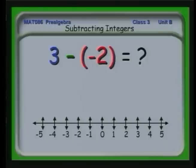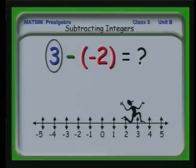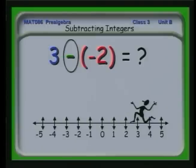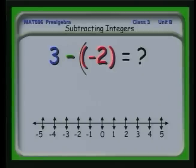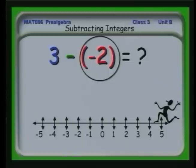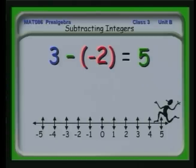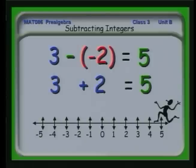Let's see how we handle 3 minus a minus 2. We start and walk forward 3. But now we have a minus sign — the creature turns around and faces the other direction. Then we have a minus 2, which says back up 2. But since the creature is turned around, we've really gone to the right 2. The total effect is that 3 minus a minus 2 is effectively the same as adding. So if you see a minus then a minus, that has the same effect as a plus.